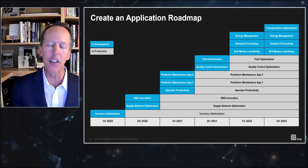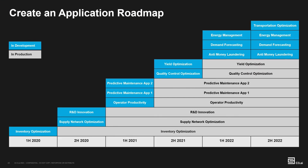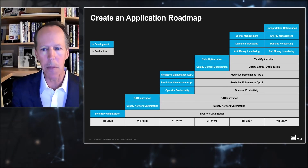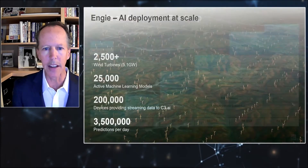One artifact from a CoE might be a six-quarter roadmap showing which applications are being developed and deployed. For example, in the first half of 2020, it took about six months to develop and deploy an AI-based inventory optimization application. Once deployed, the model creates value in production while the team moves on to use cases two and three — generating value and paying for itself over time.